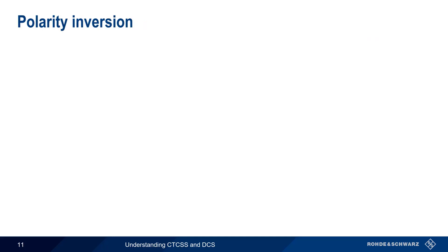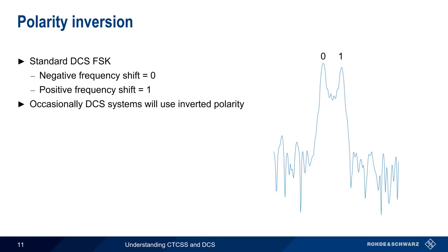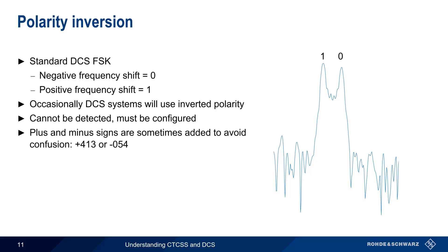In standard DCS frequency shift keying, a negative frequency shift indicates a logical 0, and a positive frequency shift indicates a logical 1. In some cases, however, DCS systems will employ inverted polarity, usually to avoid interference or other issues. There is no way to detect if a system is using normal or inverted polarity, so this must be configured on the radios. In some cases, DCS codes are preceded by a plus sign or a minus sign to indicate which polarity is in use.